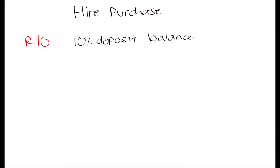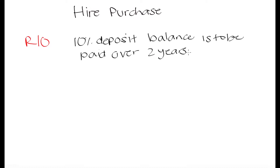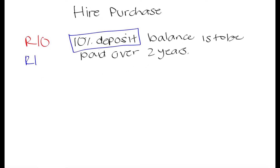In this case, 10% of R10 is going to be R1. The balance — which is the rest of the money you owe for this R10 item since you're only paying 10% upfront — is to be paid over 2 years. So you are going to need to pay that 10% deposit upfront, which is R1. Then over 2 years, you are going to have to pay the balance.